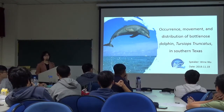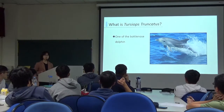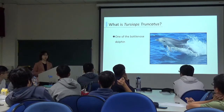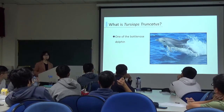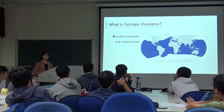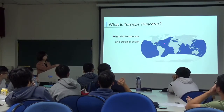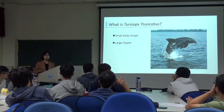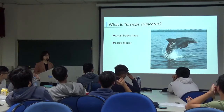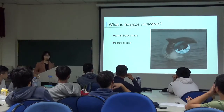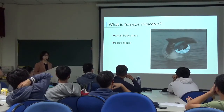First of all, let me tell you about what bottlenose dolphins are. Bottlenose dolphins are one of the bottlenose dolphin species. They are also called common bottlenose dolphins or Atlantic bottlenose dolphins. They have a temperate and tropical ocean range throughout the world. Some dolphin populations live closer to the shore, while others live farther out to sea. About the coastal dolphins, they appear to adapt to warm, shallow waters, so they have small bodies and large flippers for maneuverability and heat dispersal.